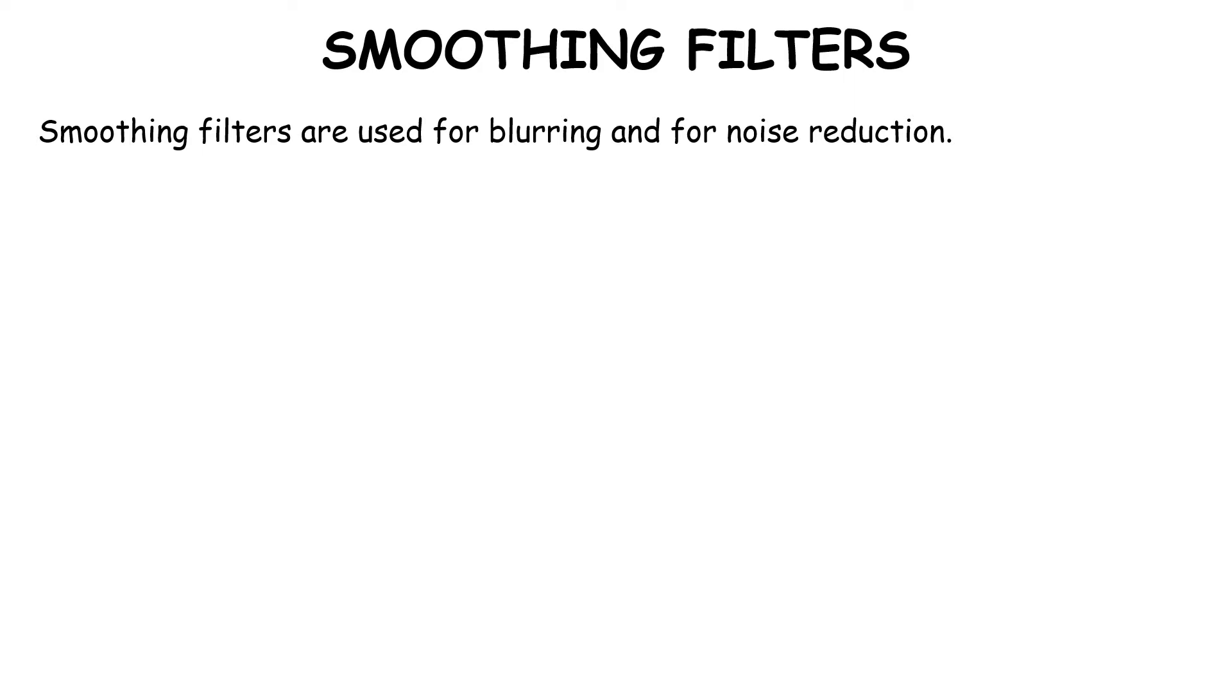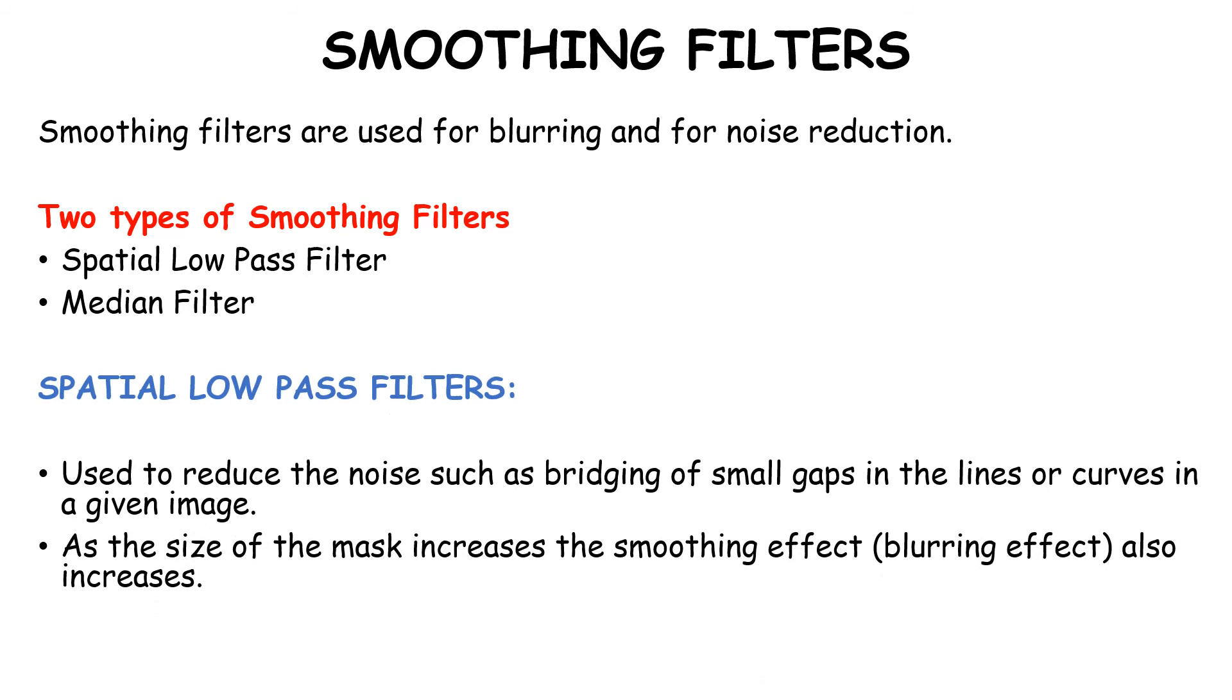Smoothing filters are used for blurring and for noise reduction. There are two types of smoothing filters: spatial low-pass filter and median filter. The spatial low-pass filter is used to reduce noise such as bridging small gaps in lines or curves in a given image. As the size of the mask increases, the smoothing effect or blurring effect also increases.